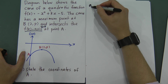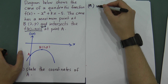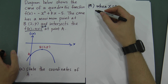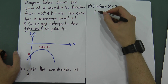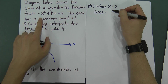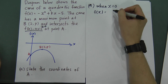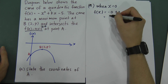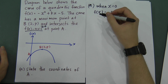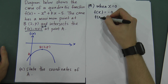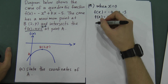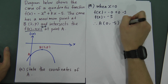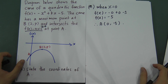For Part A, when x = 0, f(x) = -(0)² + k(0) - 5 = 0 + 0 - 5 = -5. So the coordinate of A is (0, -5). Done, easy.